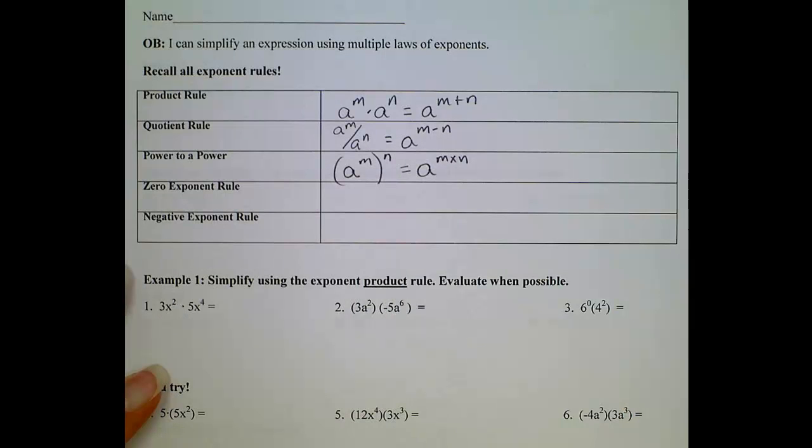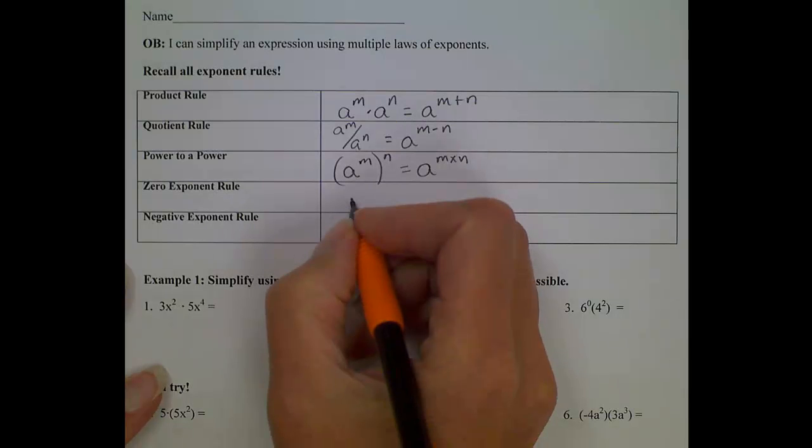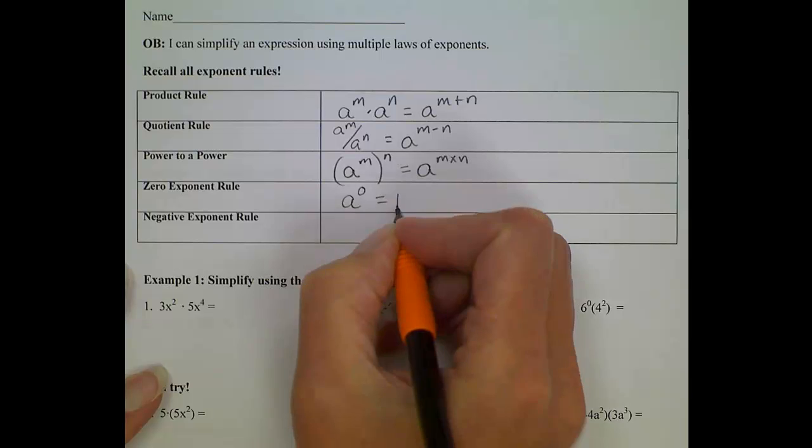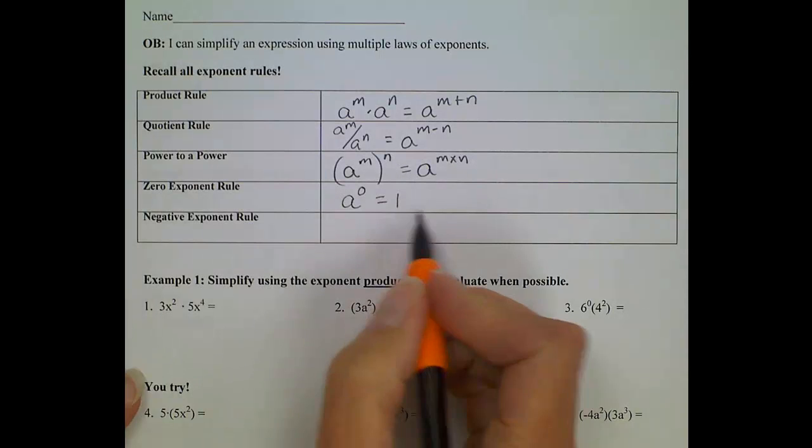And we have the zero exponent rule, my personal favorite. If you have any number raised to a zero power, your answer is always one. Don't get that confused, it's not zero, the answer is one.